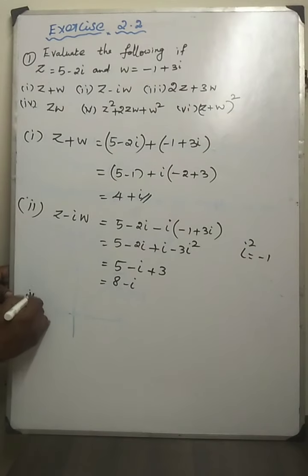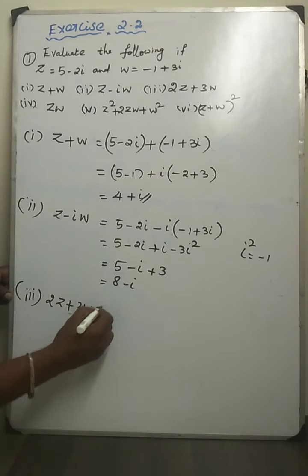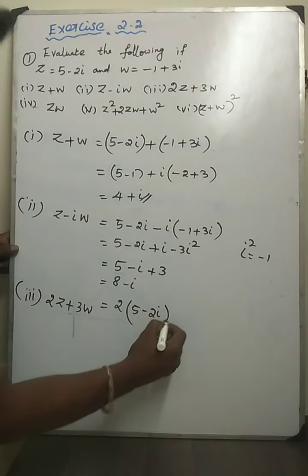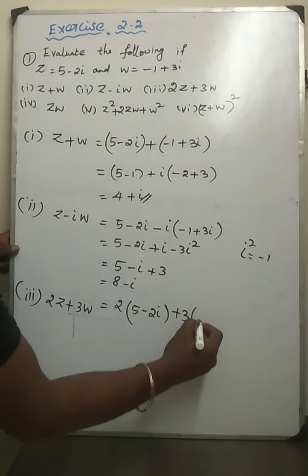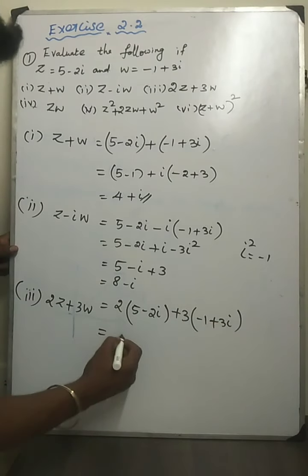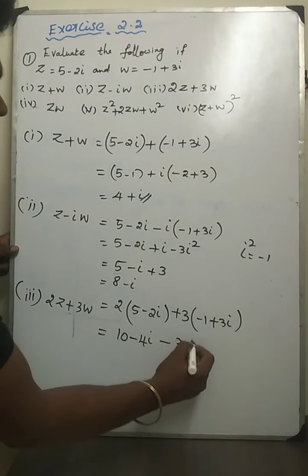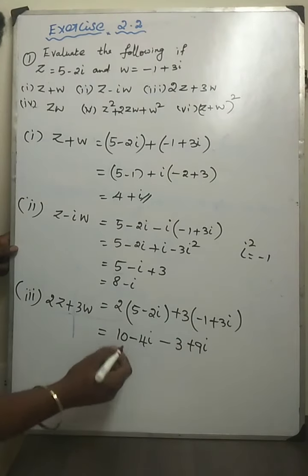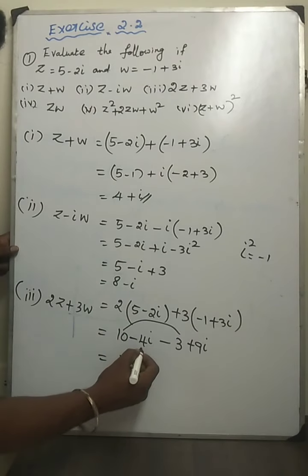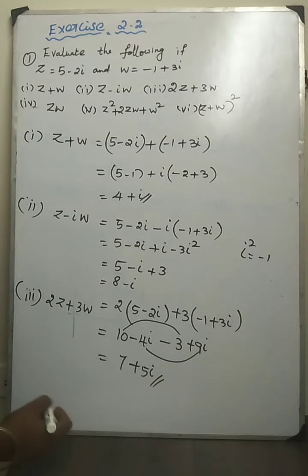Third subdivision: 2z plus 3w. z value is 5 minus 2i, and w value is minus 1 plus 3i. So 2 times 5 is 10, and 2 times minus 2i is minus 4i. Then 3 times minus 1 is minus 3, and 3 times 3i is 9i. Real parts: 10 minus 3 equals 7. Imaginary parts: minus 4i plus 9i equals 5i. The answer is 7 plus 5i.